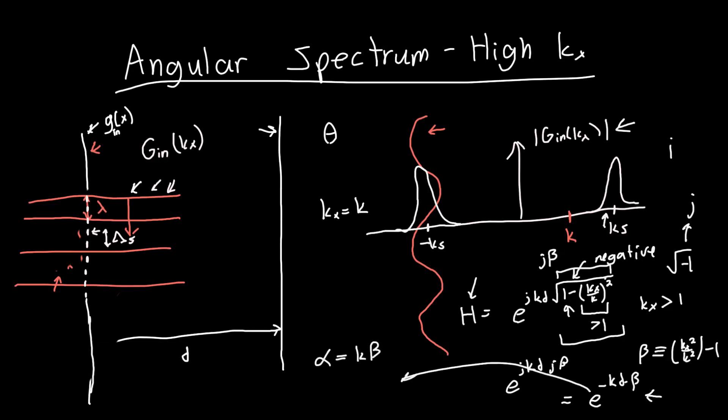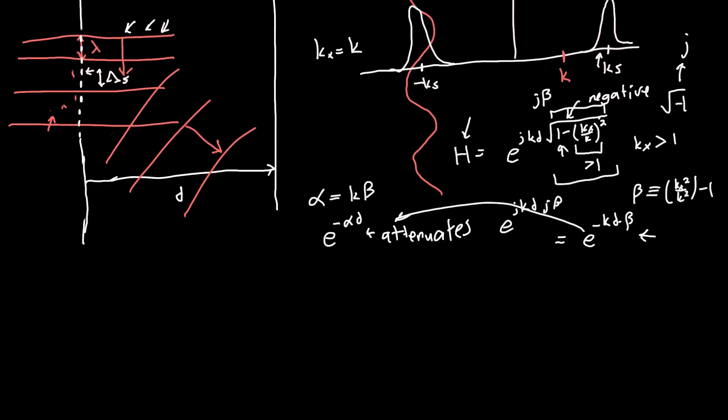So I'm going to say that alpha, our attenuation coefficient, is just equal to k beta. And so our transfer function is e to the minus alpha d. And so as we propagate a distance d away from the screen, rather than our plane wave advancing, rather than our plane wave propagating in space, it instead attenuates.